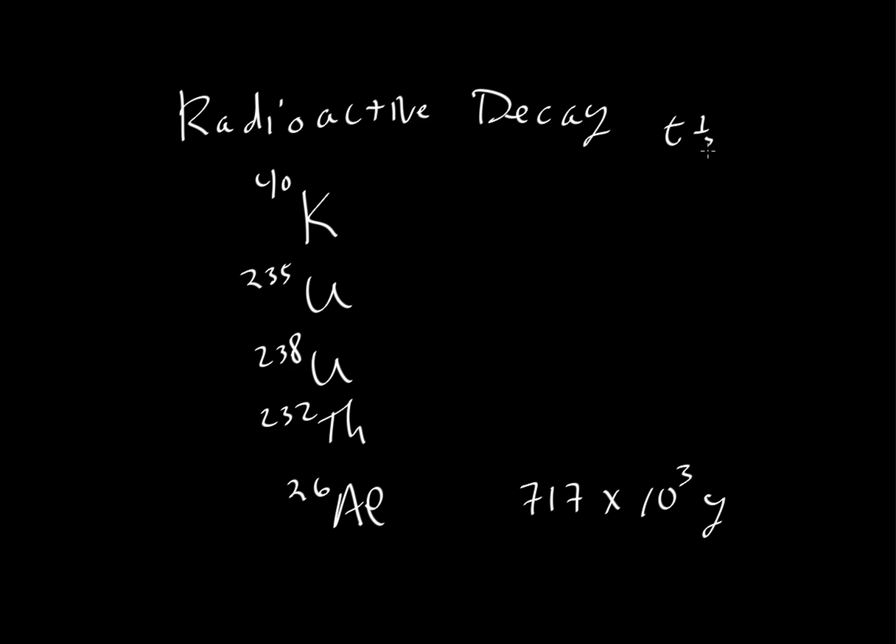Let's just write this as T1 half. We'll make a little table. For potassium, it's about 1.28 times 10 to the 9 years. For uranium-235, it's about 0.7 times 10 to the 9 years. 238 uranium has a half-life that is, by coincidence, very close to the age of the Earth, 4.5 billion years. Then for thorium-232, it's about 14 billion years. So you can see these are all in 10 to the 9-year range.